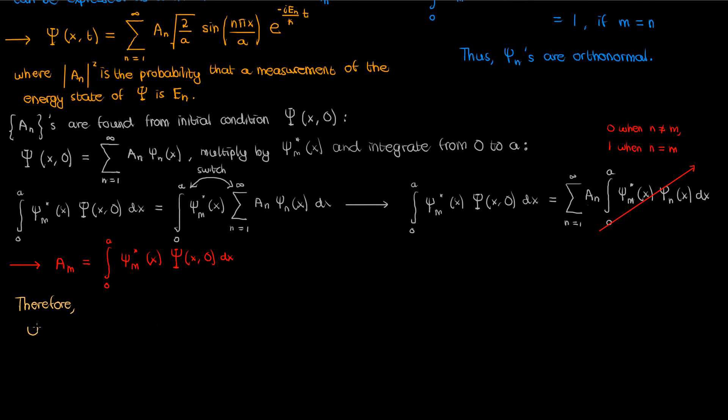So therefore our general solution big psi of x comma t to the Schrödinger equation for the infinite square well is given by the sum from n equals 1 to infinity of capital A sub n times the square root of 2 over small a times sine of n pi x over a times the exponential of negative i times E sub n over h-bar times time, where n is a positive integer and the coefficient capital A sub n is given by this integral.